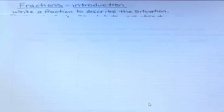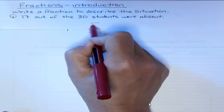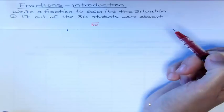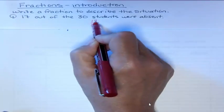So, write a fraction to describe the situation. The situation is 17 of the 30 students were absent. Well, we want to write a fraction. We want to decide what's the numerator and what's the denominator. Since there's a total of 30 students, we're talking about that as the denominator. And of those, 17 were absent. So we have 17 out of 30.